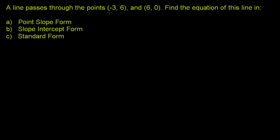A line passes through the points (-3, 6) and (6, 0). Find the equation of this line in point-slope form, slope-intercept form, and standard form.